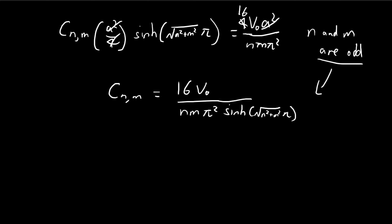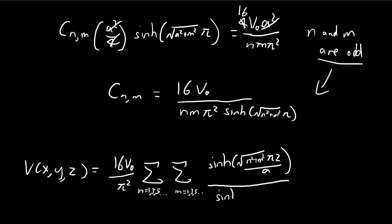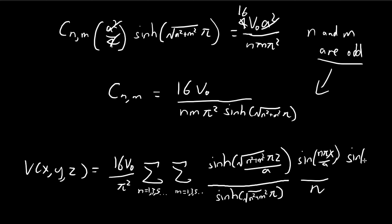Combining everything back into the original solution, the final answer is a double sum over odd n and m of C_{nm}·sin(nπx/a)·sin(mπy/a)·sinh(√(n²+m²)·πz/a)/[n·m·sinh(√(n²+m²)·π)], where the coefficient C_{nm} equals 16V₀/(nm π²) for odd n and m, and zero otherwise. This is the complete solution for the potential inside the cube.